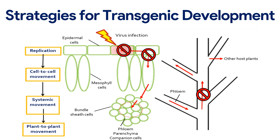Transgenic virus-resistant plants were first produced in 1986 by genetically engineering tobacco plants to express the coat protein of tobacco mosaic virus. The introduction of coat protein transgenes has since proved to be an extremely effective and generally applicable approach to engineering virus resistance in crop plants. Extensive field trials with transgenic virus-resistant tobacco, tomato, potato, and cucumber lines have confirmed not only the durability of the resistance under natural conditions but the ease with which virus-resistant lines retaining original cultivar traits can be recovered. Strategies include engineered resistance, pathogen-derived resistance, protein-based protection, and nucleic acid-based protection.